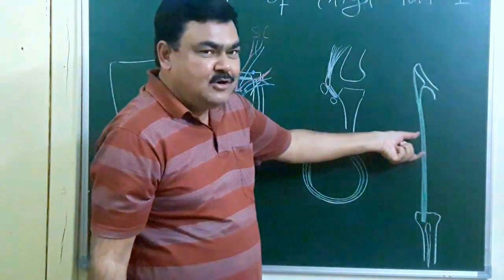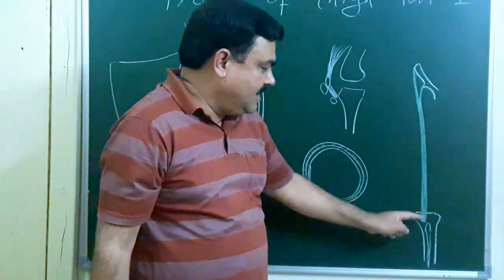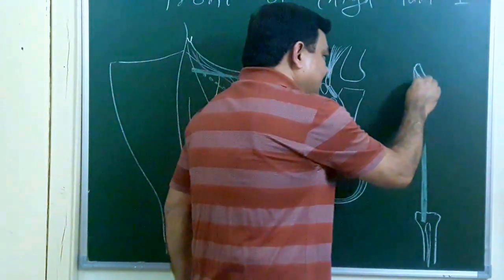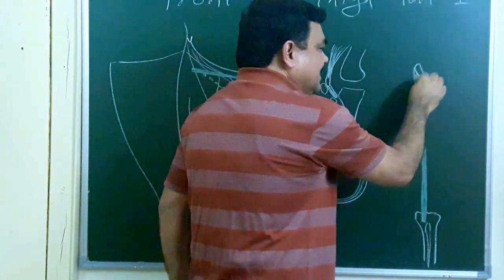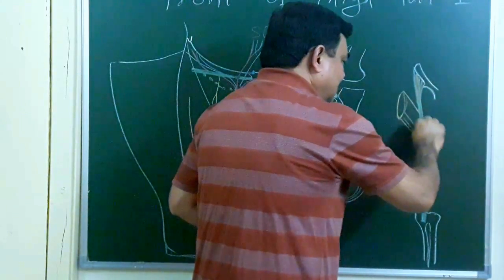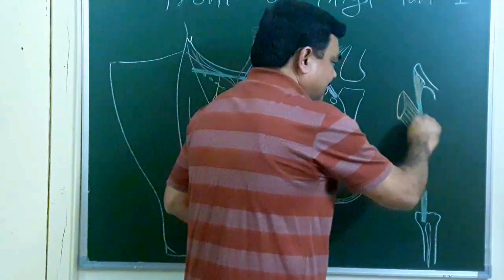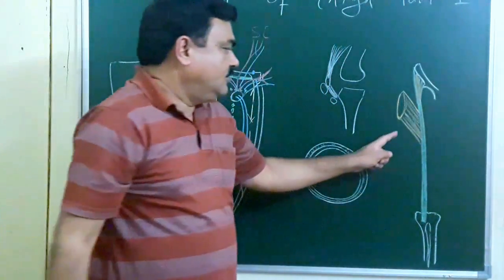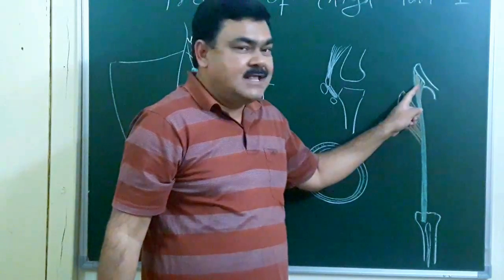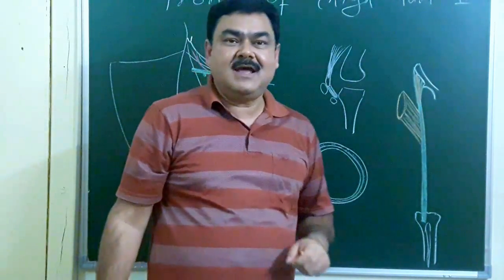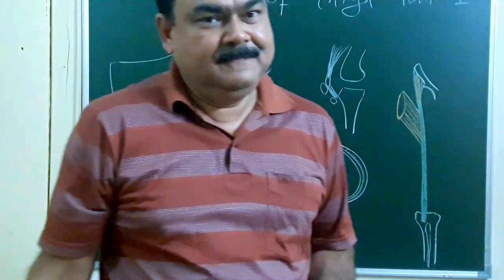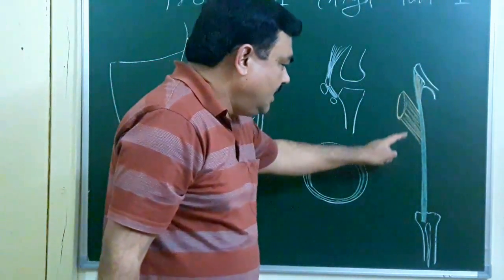The iliotibial tract is attached superiorly at the iliac crest and inferiorly at the lateral tibial condyle. It gives insertion to two muscles: tensor fasciae latae and gluteus maximus. The tensor fasciae latae stabilizes the knee joint and hip joint during extension and semi-flexion. This is all about the iliotibial tract.